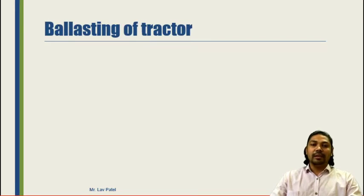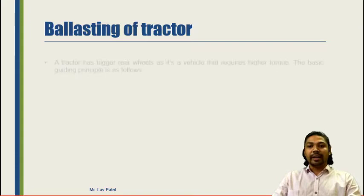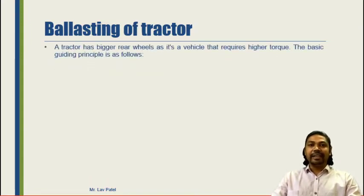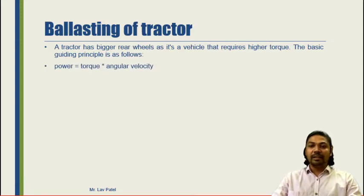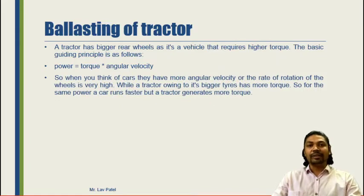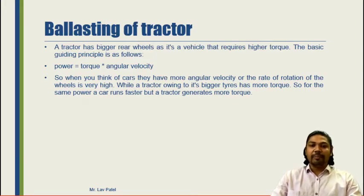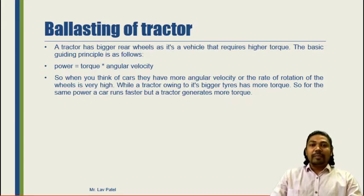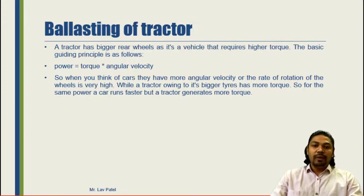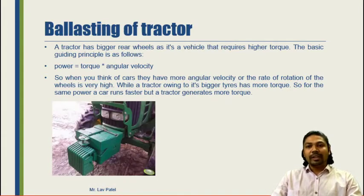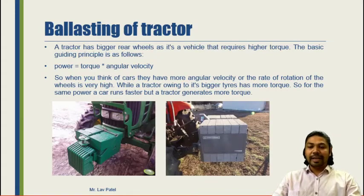Now let us go through the last topic — ballasting of tractors. Tractors have bigger rear wheels for higher torque. The basic torque principle states that power equals torque multiplied by angular velocity. Comparing a tractor with a car, the car has more angular velocity, but due to the larger rear wheels the tractor produces more torque. The main priority for tractors is to produce a maximum amount of torque — for the same power, a car runs faster but the tractor generates more torque.